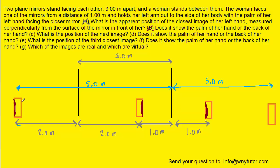Notice that the back of her hand is facing that mirror. So when its image shows up behind the mirror, we're going to see the back of her hand, which means that the palm is on the other side. So the answer to part C, which asks us to locate this second image behind the nearer mirror, is going to be five meters behind that nearest mirror. That is the correct answer to part C.